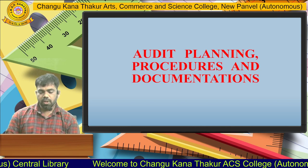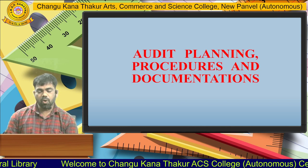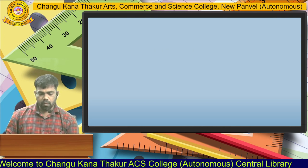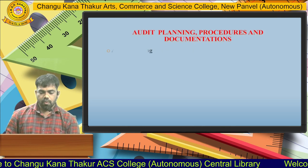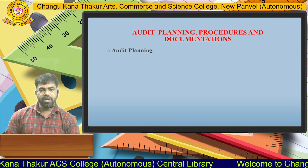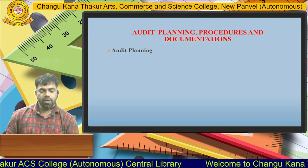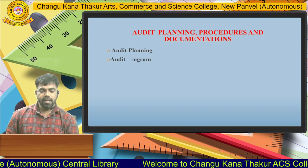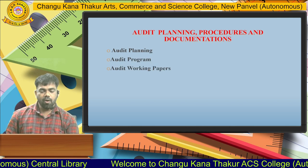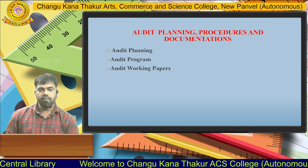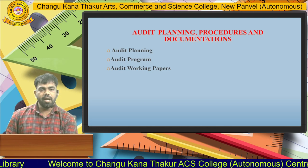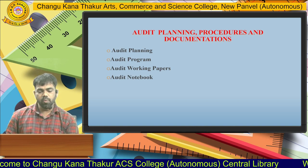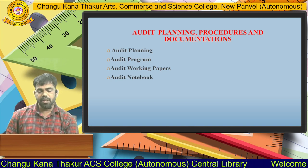In Unit 2, Audit Planning Procedure and Documentation, we are going to cover four chapters: audit planning, which we are studying today; then audit program; then audit working papers — the documents used by an auditor; and finally audit notebook.